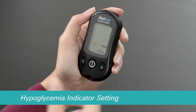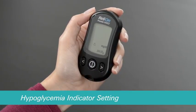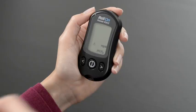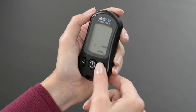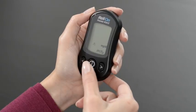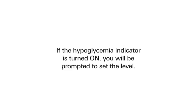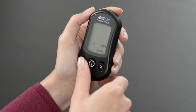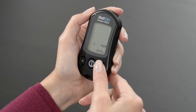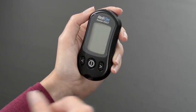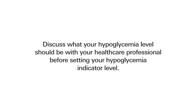Then press the center button to proceed to the hypoglycemia indicator setting. Use the left or right arrow buttons to turn on or off the hypoglycemic indicator and press the center button to make your selection. If the hypoglycemia indicator is turned on, you will be prompted to set the level. Press the left or right button to set the hypoglycemic indicator level. Discuss what your hypoglycemia level should be with your health care professional before setting your hypoglycemia indicator level.